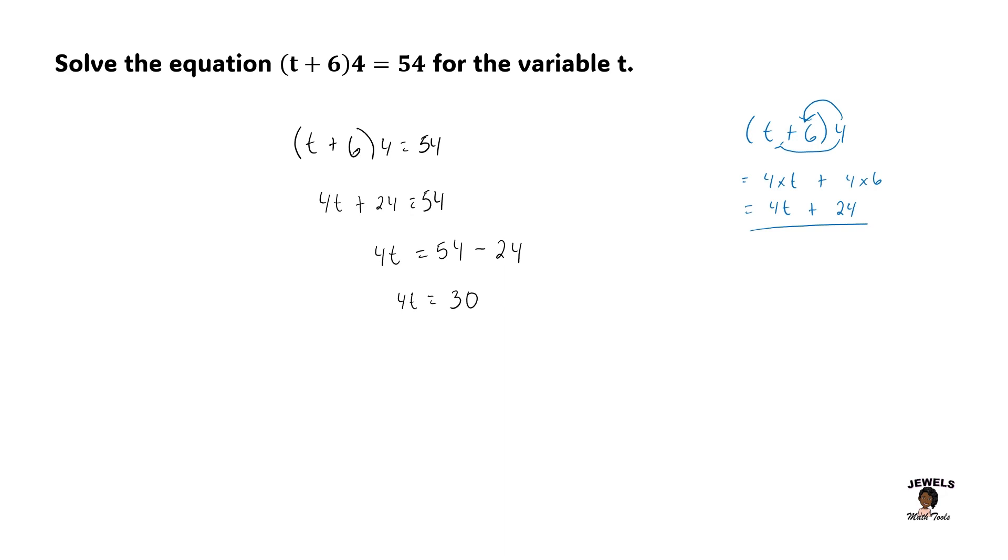So we have 4t equal to 54 minus 24, which is equal to 30. And that's using our first step. So now we're going to move into using our second step of our two-step equations. Our second step is because we are multiplying here, I will now be using division to get my variable alone. I'm going to divide both sides of my equation by 4.